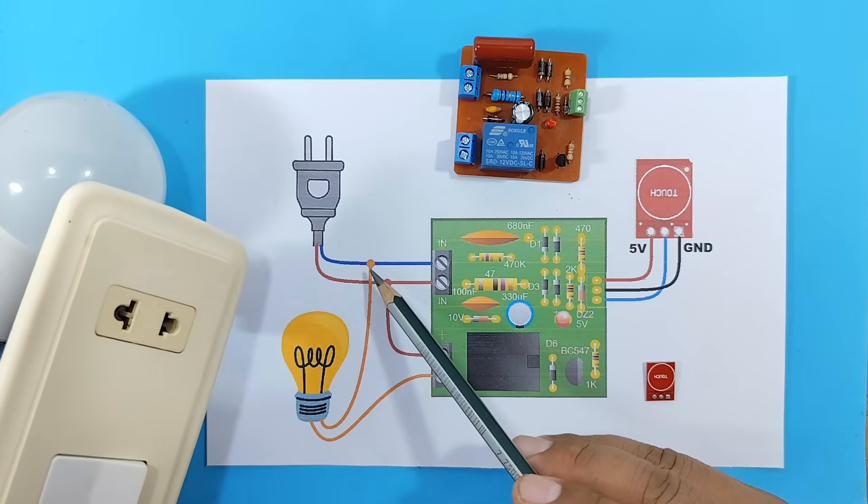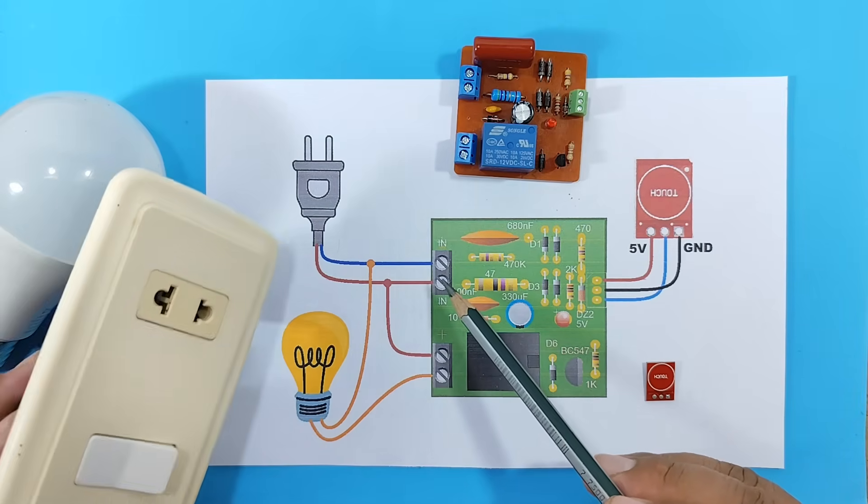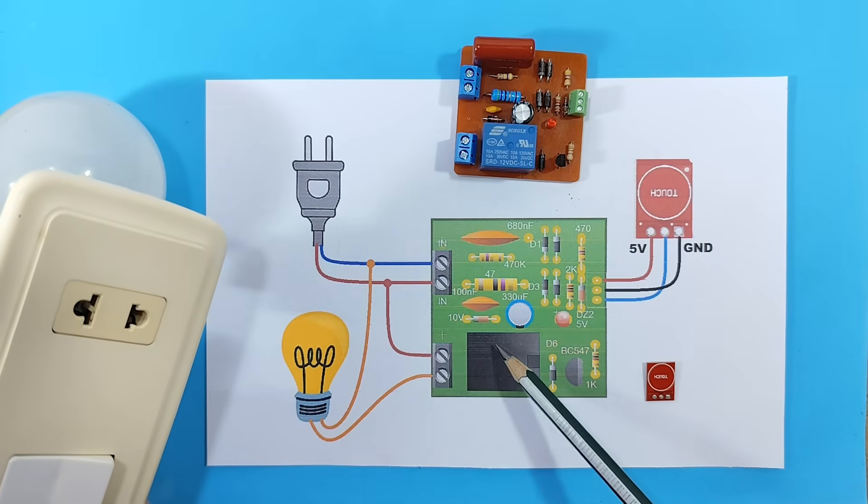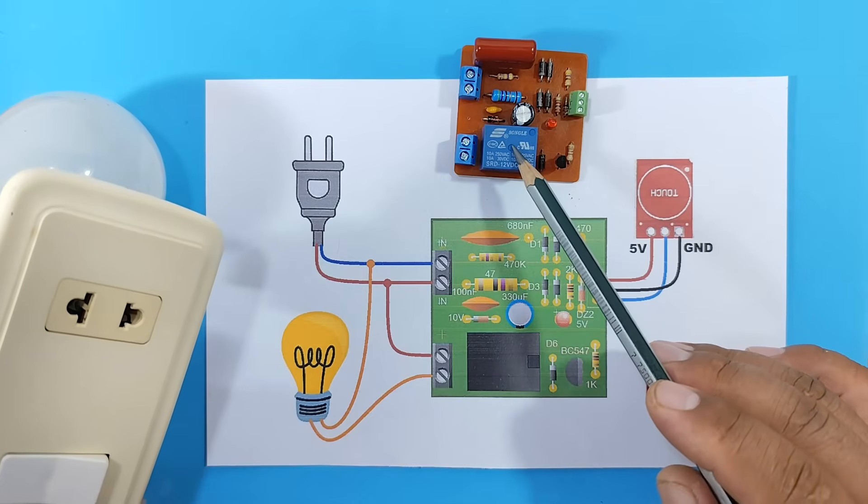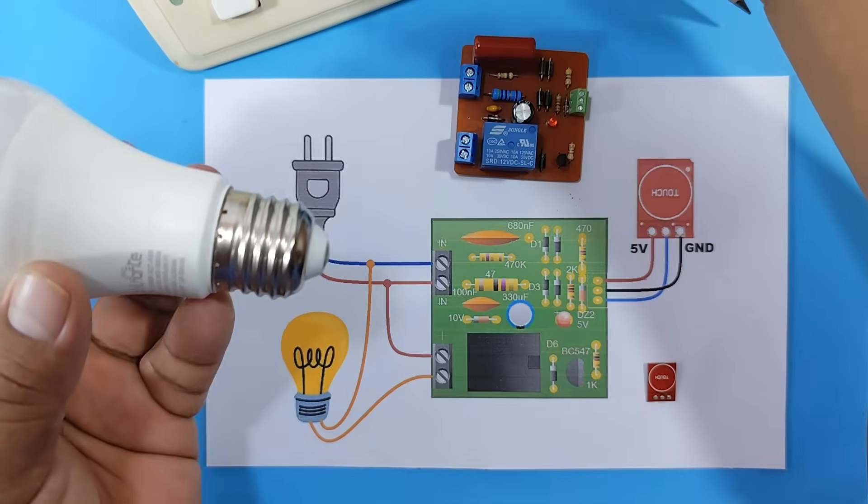From here, we'll need to connect the neutral wire to one of the terminal blocks, and the live wire to the other terminal block. From there, we'll connect the live wire to one of our relay's terminal blocks. The other terminal block will be connected to one of the contacts of our light bulb.